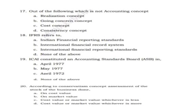Next: ICAI — Institute of Chartered Accountants of India — constituted an Accounting Standards Board (ASB) in which year? The options are April 1977, May 1977, April 1972, or none of the above. The answer is April 1977.